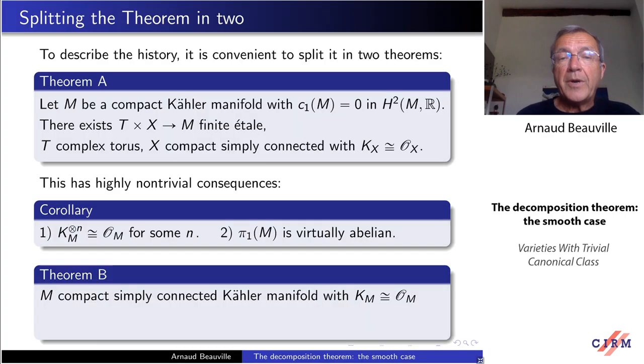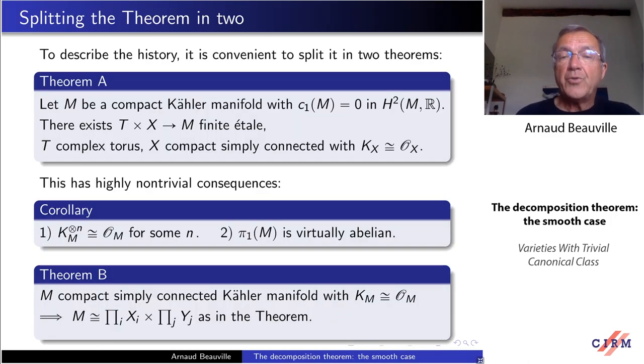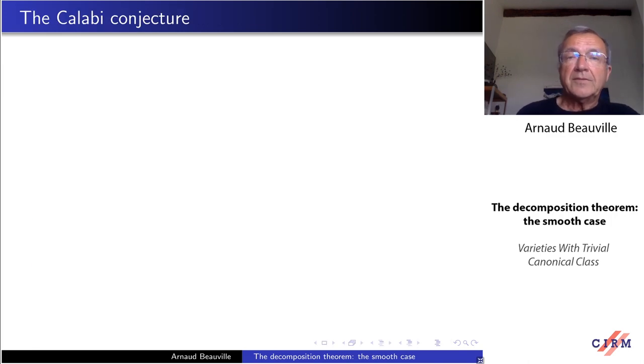The second part, which is here in B, deals with the remaining case with this X that we have here, which is simply connected with trivial canonical bundle. Let's take a manifold with these properties, and we have a further splitting between Calabi-Yau and symplectic holomorphic, irreducible as in the theorem. We can say that there are two different theorems. For explaining the history, it's important to separate the two statements. Let me start the history of this problem.